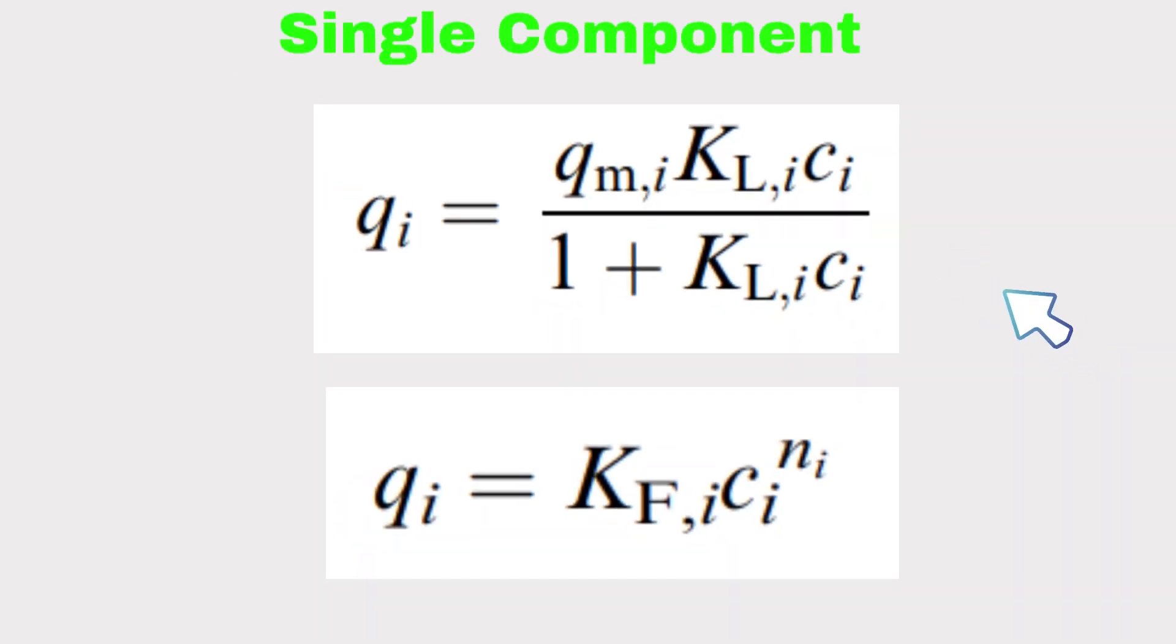The most common single component isotherm model is Langmuir and Freundlich isotherm model. Here is the Langmuir model: qi equal to qm times kl times ci divided by 1 plus kl times ci.